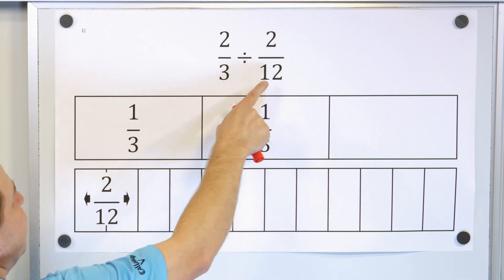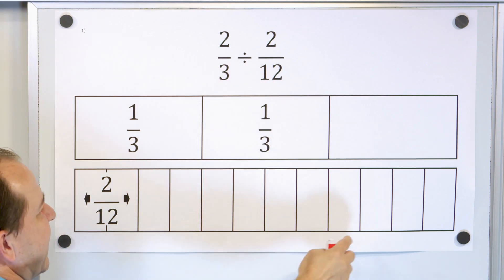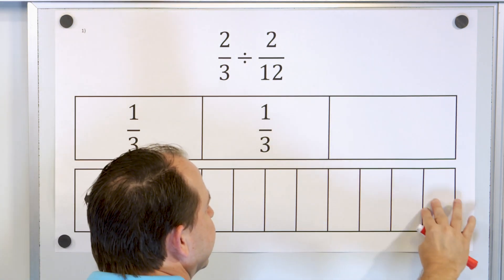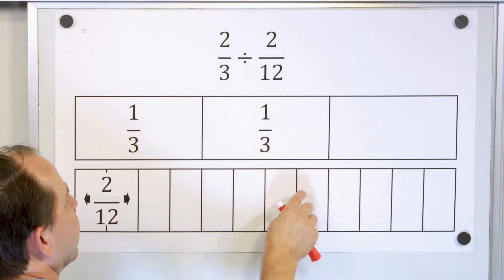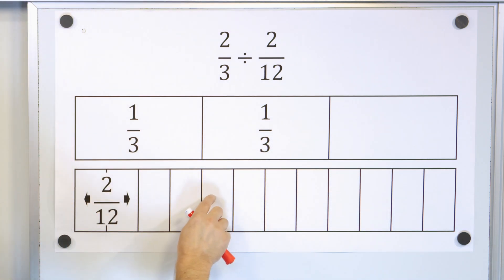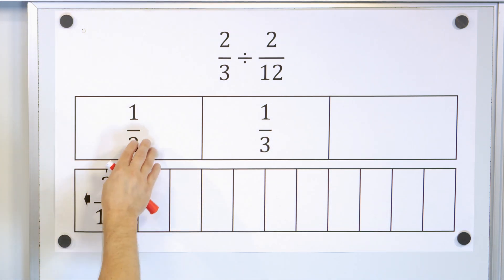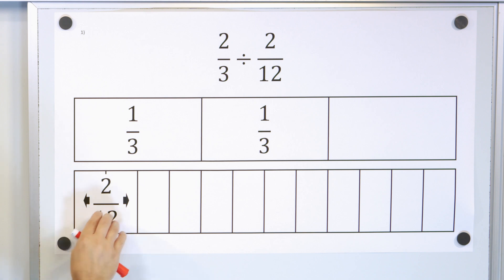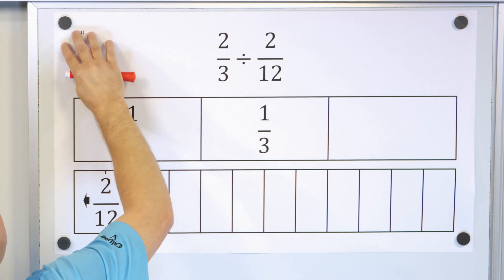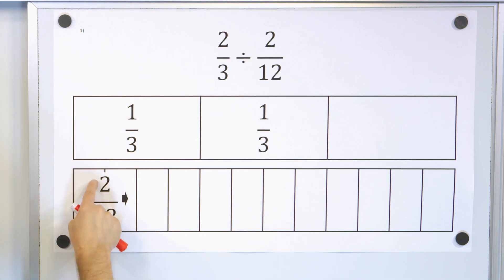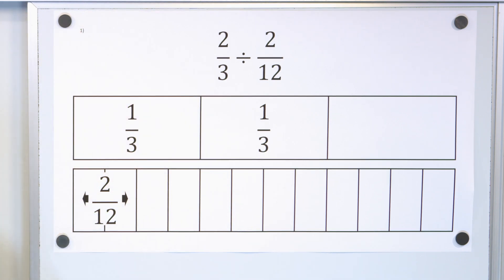Now, two-twelfths means I cut the same thing into twelve pieces and keep two of them. Notice this entire portion is two-twelfths.